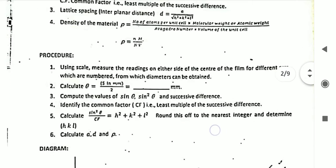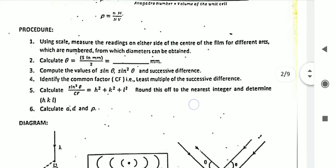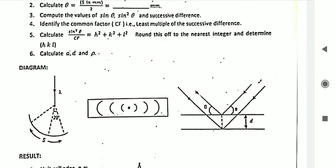The procedure is a very simple experiment. Step one: using the scale, measure the readings on either side of the center of the film for the different arcs, from which the diameter can be calculated. Step two: theta equals S millimeters divided by 2. Step three: compute the values of sine theta, hence sine squared theta, and successive difference. Step four: identify the common factor, that is the least multiple of the successive differences. Step five: calculate sine squared theta divided by CF, which equals h² + k² + l². Round off to the nearest integer and determine the values of h, k, l. Finally, calculate A, D, and rho. These are the formulas, and S is shown in the schematic representation, which is based on Bragg's law.